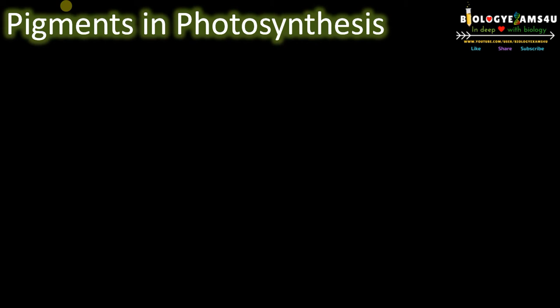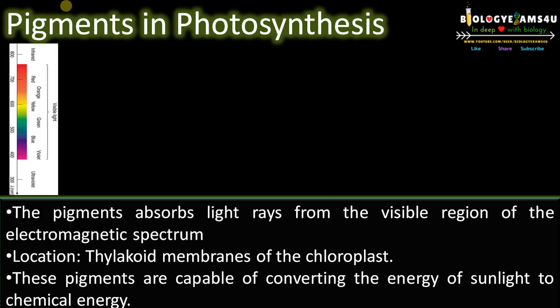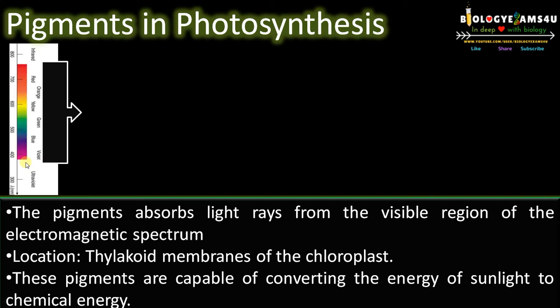Hi friends, let's begin with pigments. Pigments are chemicals that can absorb light rays from the visible region of the electromagnetic spectrum, that is from 400 to 700 nanometers approximately, which is called photosynthetically active radiation.